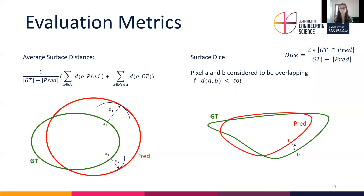The second metric is the surface Dice, which is similar to a normal Dice. However, pixels on the two boundaries are considered to be overlapping if the shortest Euclidean distance between them is smaller than a certain tolerance. This tolerance was set to 0.6 mm for the CSP prediction, and to 1.8 mm for the left ventricle prediction, since the left ventricle is a larger structure.